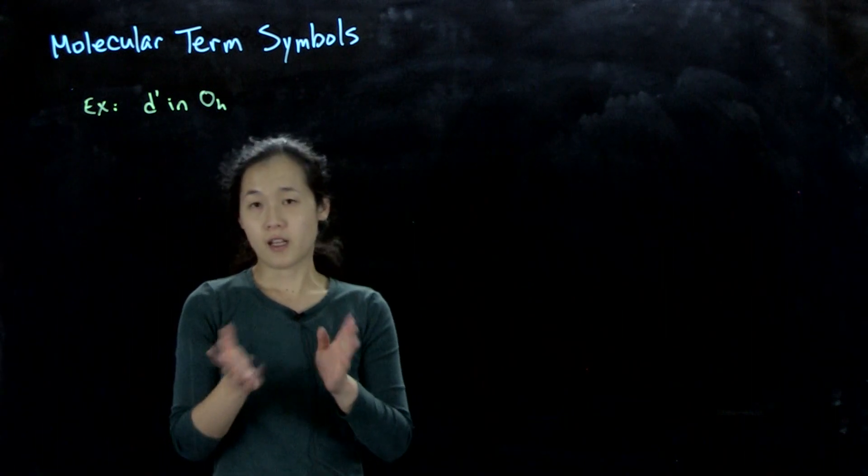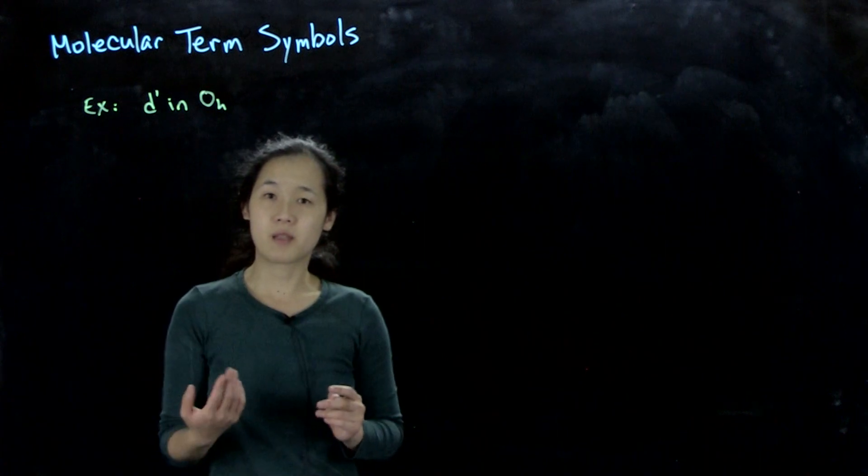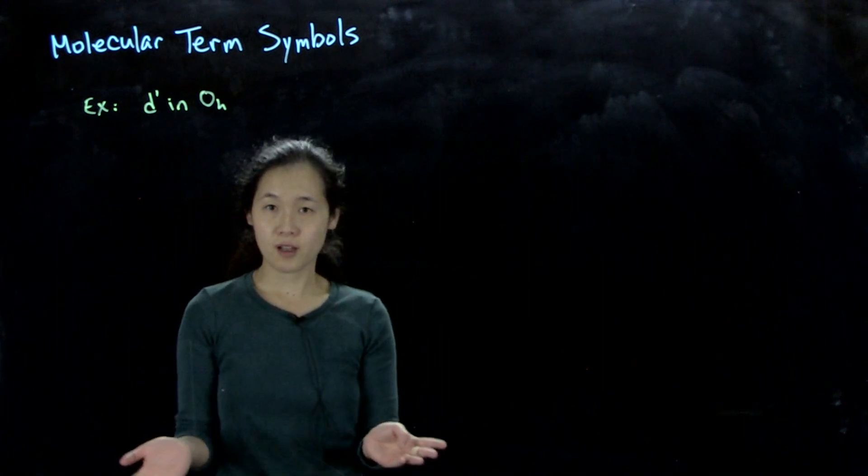In the previous video, I showed a shortcut for getting the ground state term symbols just by looking at how many ways you can fill your electrons in.